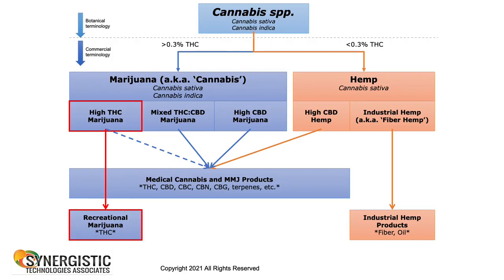This has added more confusion as we've moved through the Farm Bill for the United States and other countries that are providing raw material and crude extracts shipped into the United States or across the world. We look at high THC, mixed THC one-to-one or three-to-one, then high CBD where it has a greater amount of CBD versus THC. But each one of these has brought about more and more confusion.